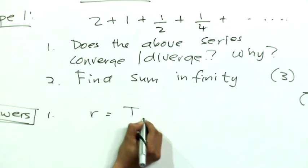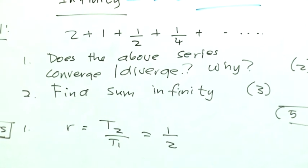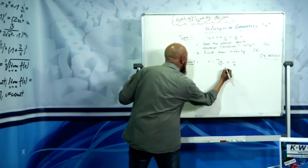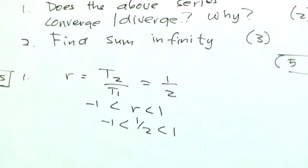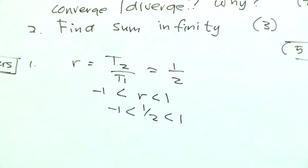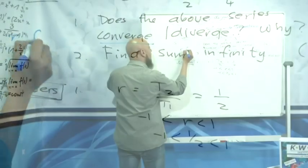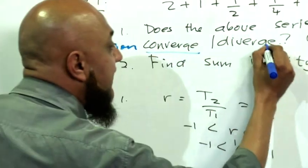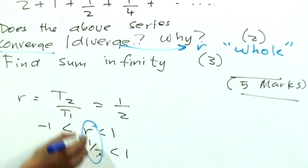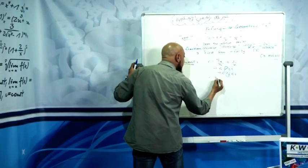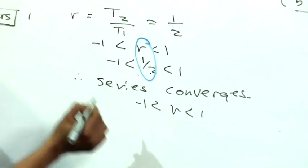R is equal to term two divided by term one, so one divided by two. R equals one half. We calculated R. What is R as an inequality? R less than one but greater than minus one. One half is less than one, greater than minus one. Does it converge or diverge? If R is a fraction, it will converge. R is a fraction, so it converges.